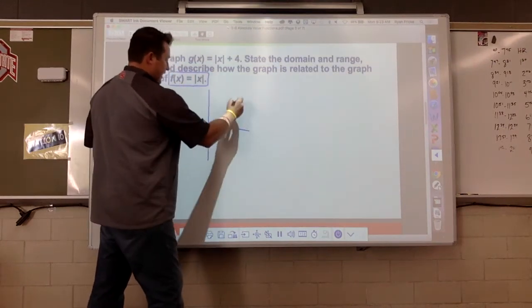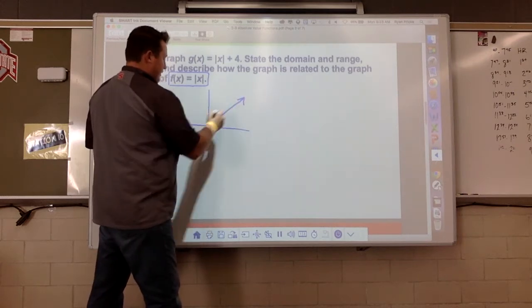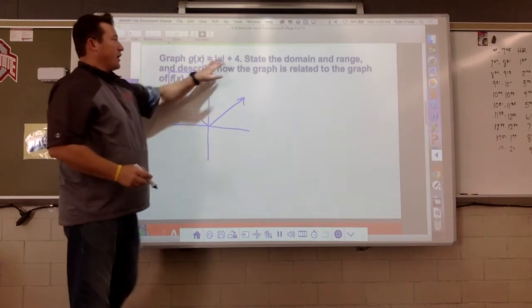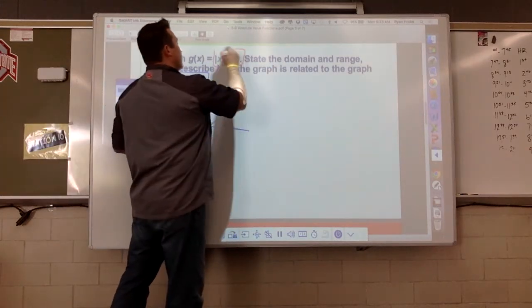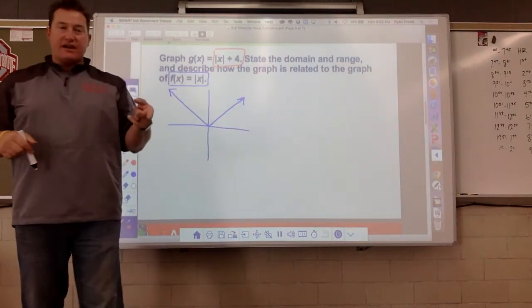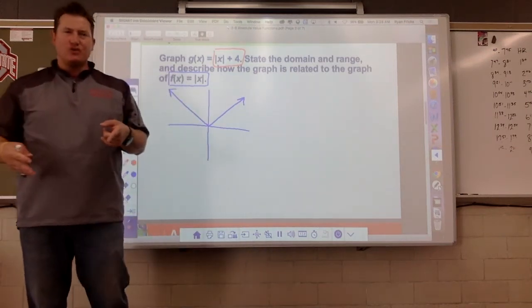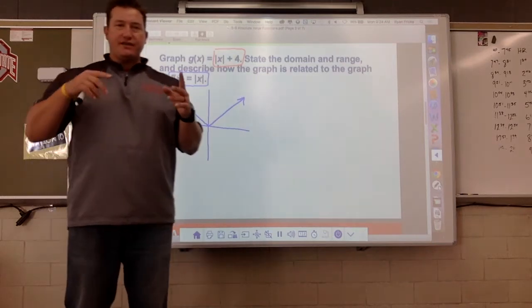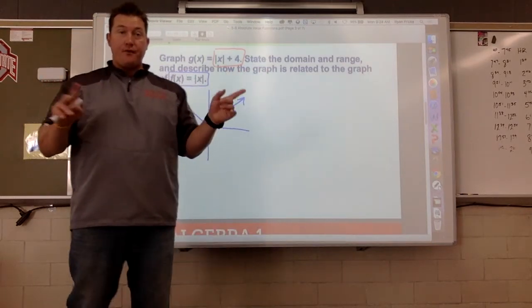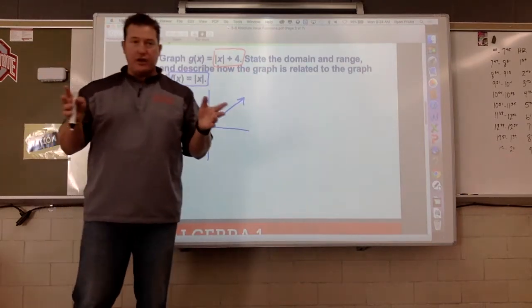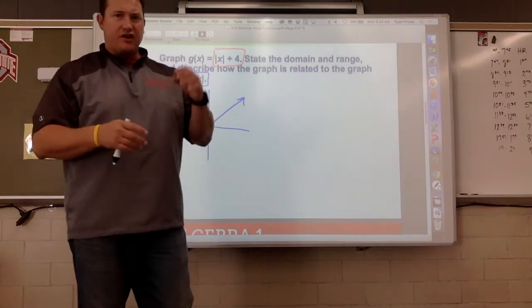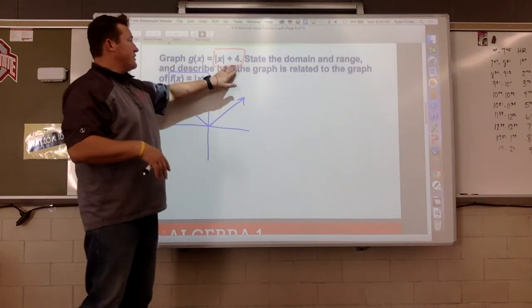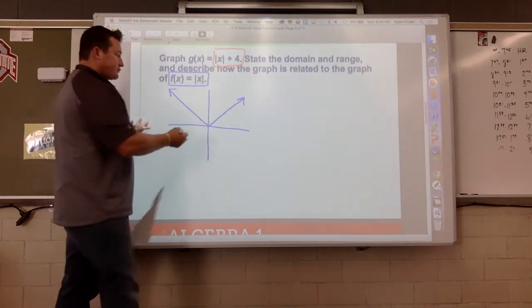So here is this one. All right, so the absolute value of x looks literally just like this. If we're gonna graph this one, think about when we have a number outside of the expression, what does that do to my graph? This is just simply an up, down, or left, right move. We don't have any of those goofy numbers in front of it that are going to do the compressions or the stretches and all that fun stuff. So this just says up four.